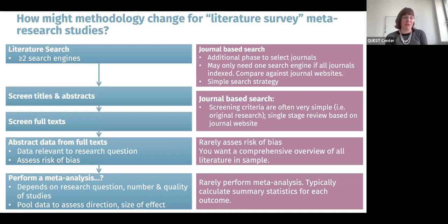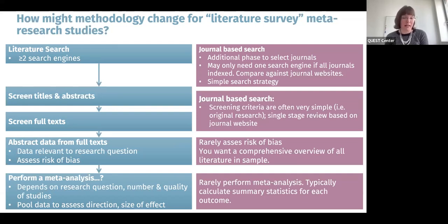When abstracting data from full texts, in a normal systematic review we want data relevant to the research question and data to assess risk of bias. With literature surveys, it's much less common to assess risk of bias. We want a comprehensive look at all literature in our sample, including literature with a higher risk of bias as well as lower. Performing a meta-analysis is also rarely done with literature surveys because it's typically not relevant to the research question — we're usually just calculating how often particular items were reported.